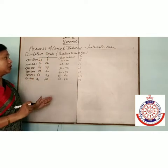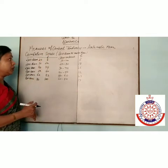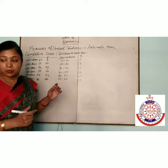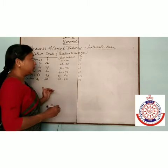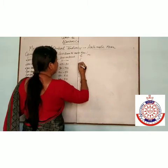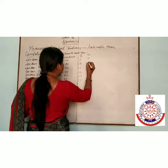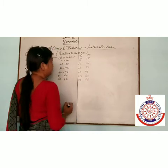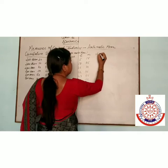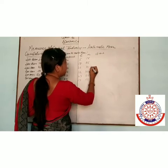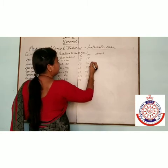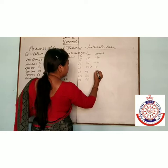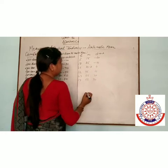Now this is our question and we calculate arithmetic mean using the shortcut method. First calculate mid-values: 15, 25, 35, 45, 55, and 65. Then calculate D = M − A, where A = 35: values are −20, −10, 0, 10, 20, and 30.